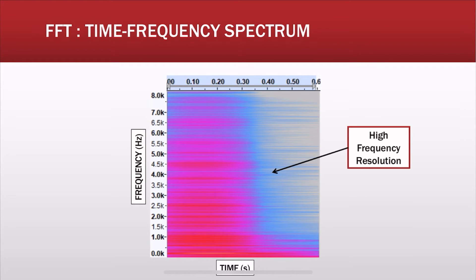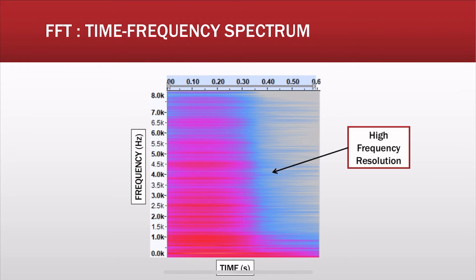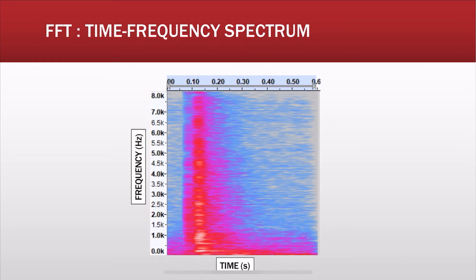We can't really make out whether the frequencies are present at 0.1 second or 0.2 second. Similarly, we don't know what frequencies are present at 0.1 second or 0.2 second. This is the trade-off: you have either high frequency resolution or high time resolution. If you try to get a compromise somewhere in between, you still get a blurred image and it's still not clear what is present where.